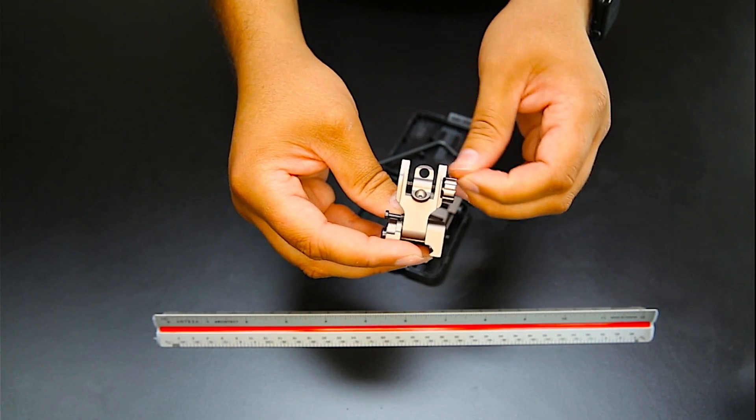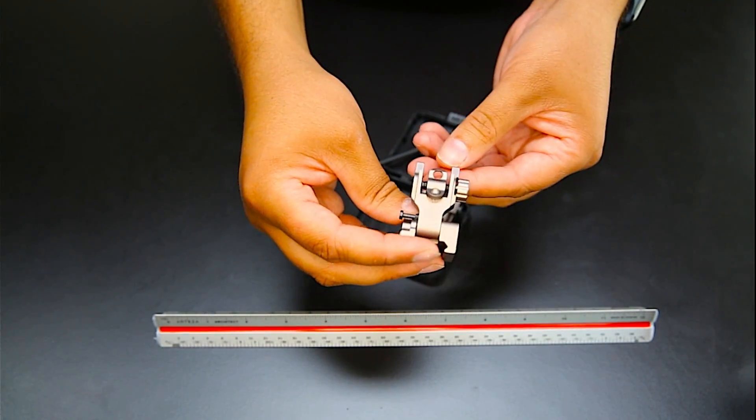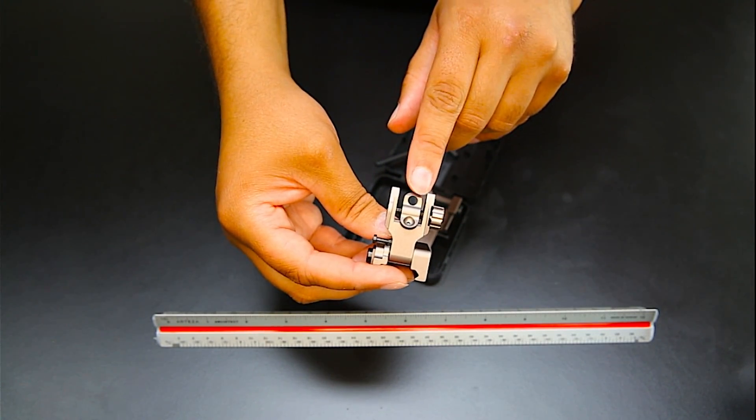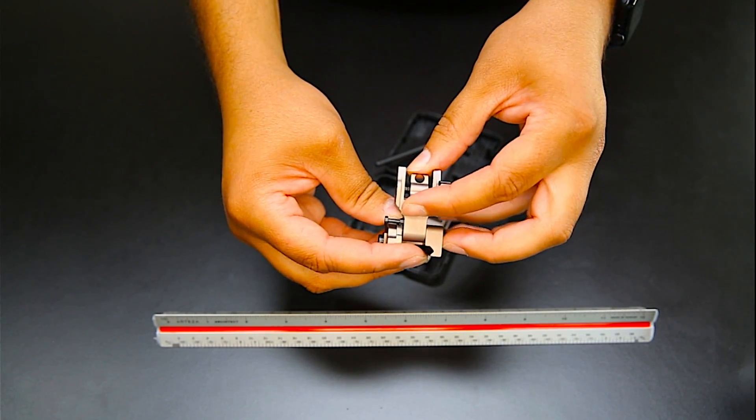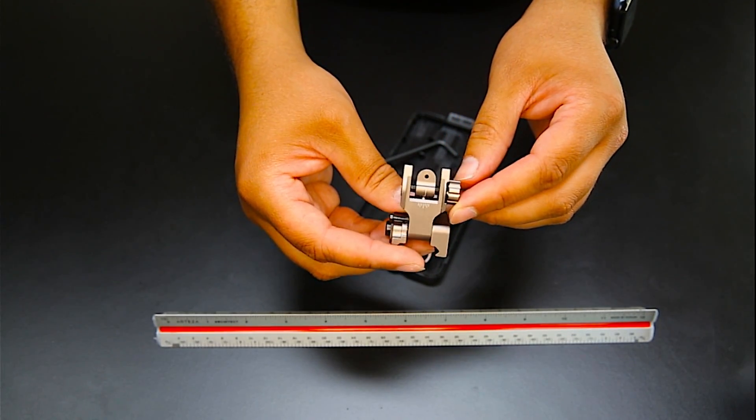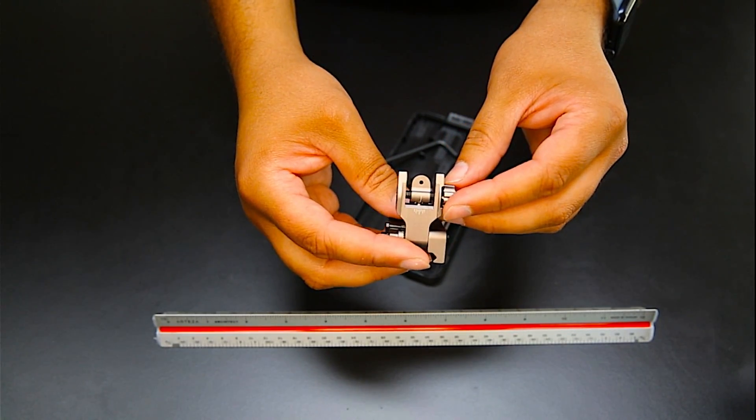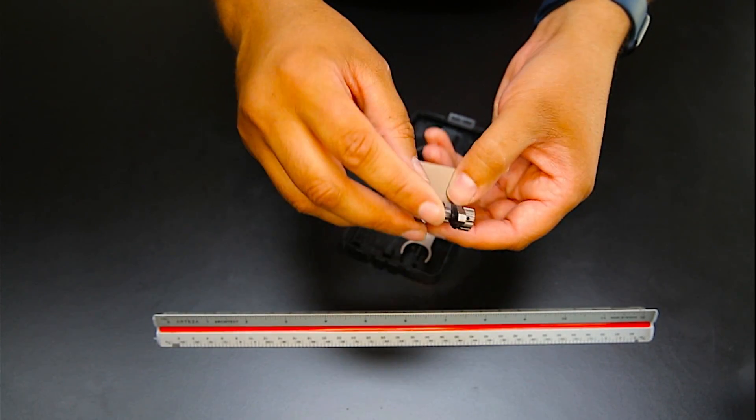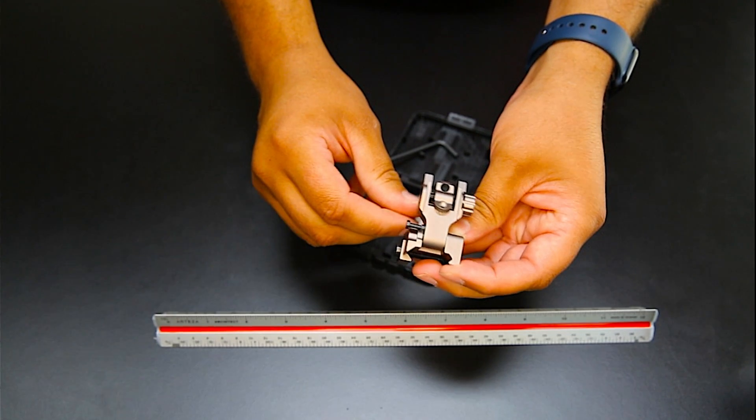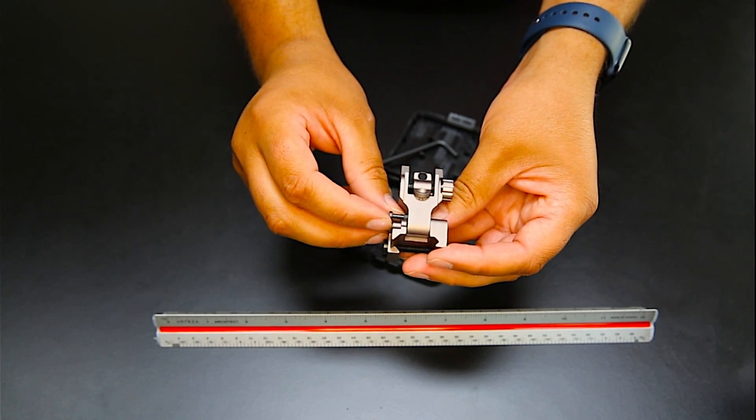And also a CQB option where it's opened up a little bit wider versus the more precise smaller hole, so you can get more precise shooting. It's nice that you have those two different options - if you just need some quick close quarter stuff, you've got that bigger hole to look through.